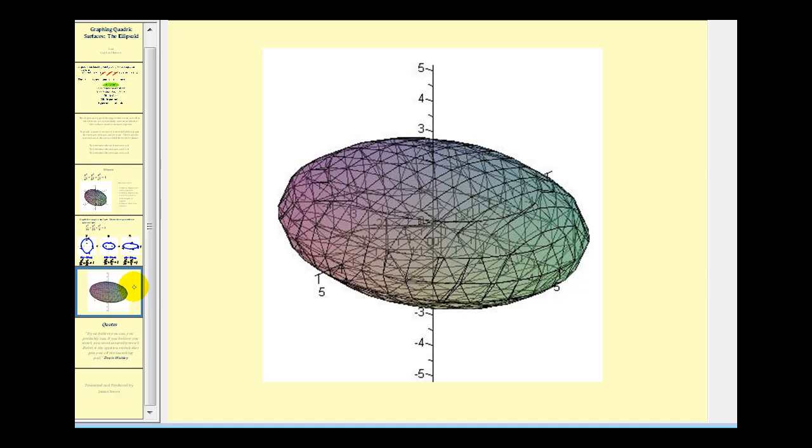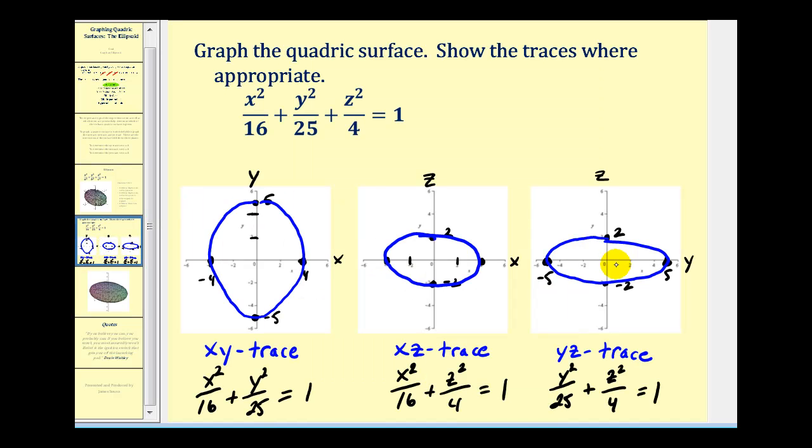And again, if we take a look at where this surface intersects the three planes, it would look just like what we had here as our three traces. If we take a look at this in a more dynamic graph, it'll become much more obvious.